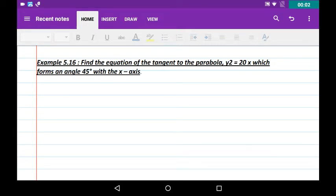Hi, this is the series on differential calculus applications. This will be the next example, Example 5.16: Find the equation of the tangent to the parabola y² = 20x which forms an angle 45° with the x-axis.